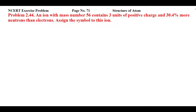Students, this is NCERT exercise problem 2.44 from page number 71 of Structure of Atom. An iron with mass number 56 contains three units of positive charge and 30.4 percent more neutrons than electrons. We have to assign the symbol to this ion. The mass number is 56, it carries three units of positive charge, and the number of neutrons are 30.4 percent more than electrons.